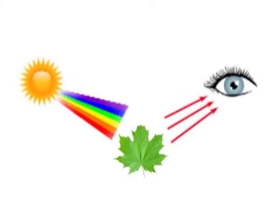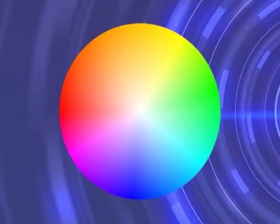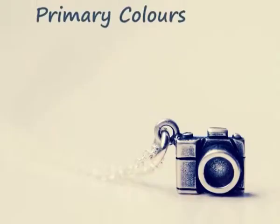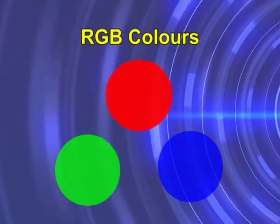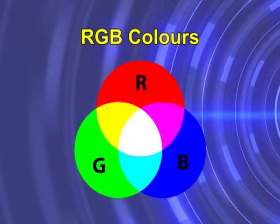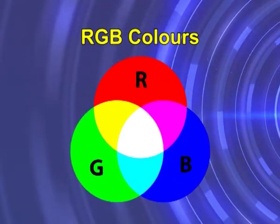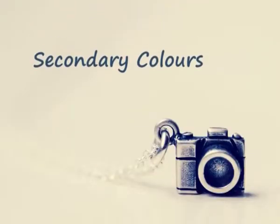Now that we have learned what color is, let's look at different types of color. The colors which are part of white light are mainly divided into two types, easily understood through the color wheel. First, primary colors. There are three primary colors — red, green, and blue, commonly known as RGB — which you already know. Different combinations of these three colors can produce all the colors in the visible spectrum, and interestingly, mixing them in equal amounts gives white light.